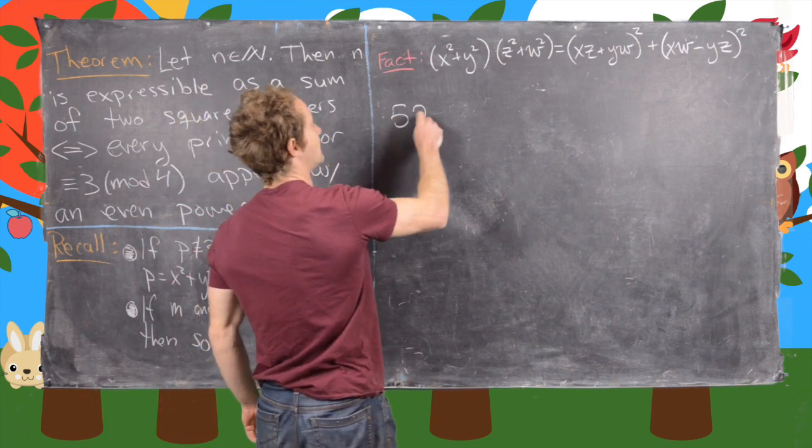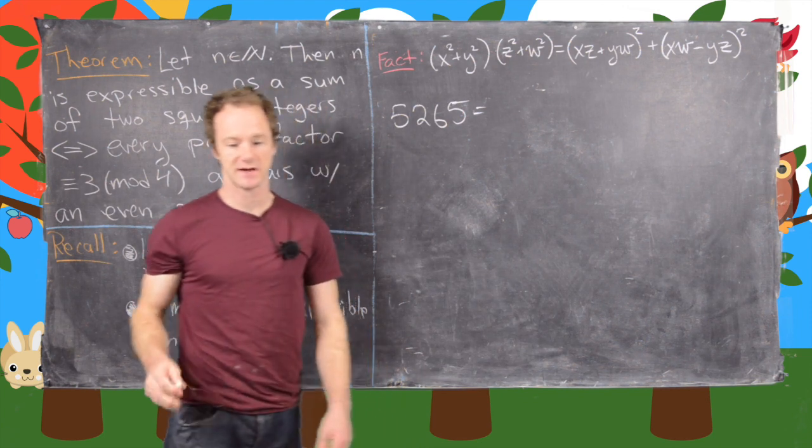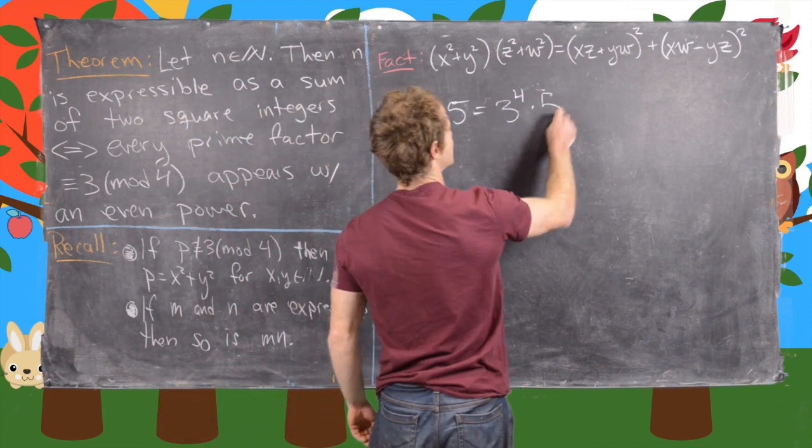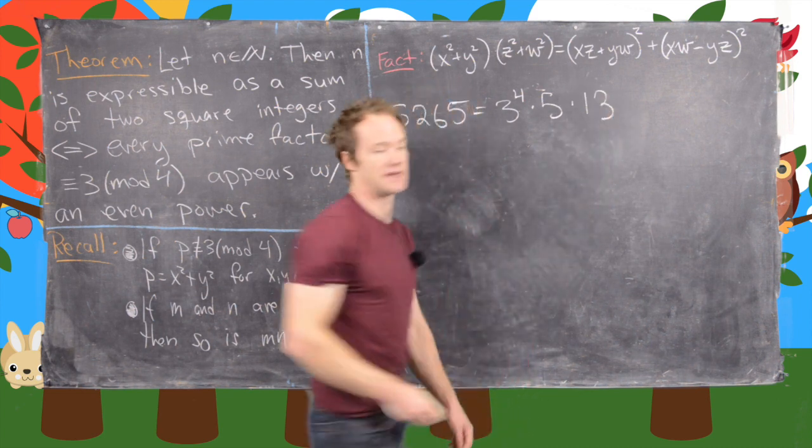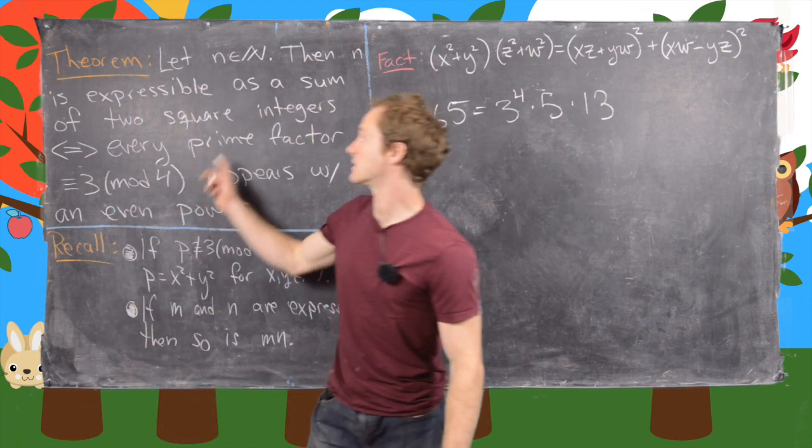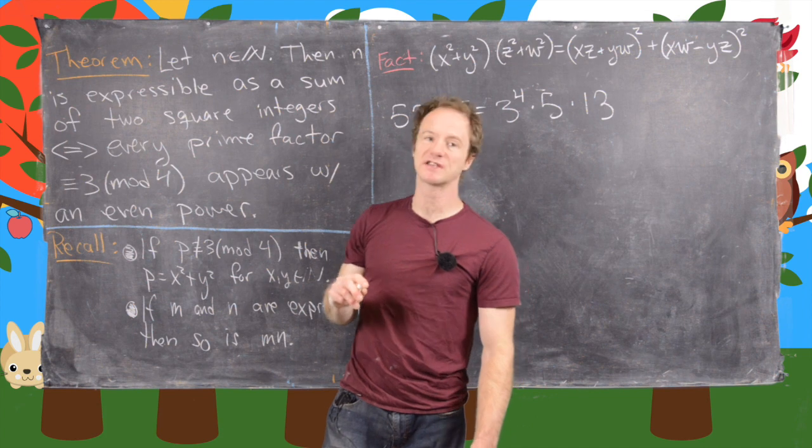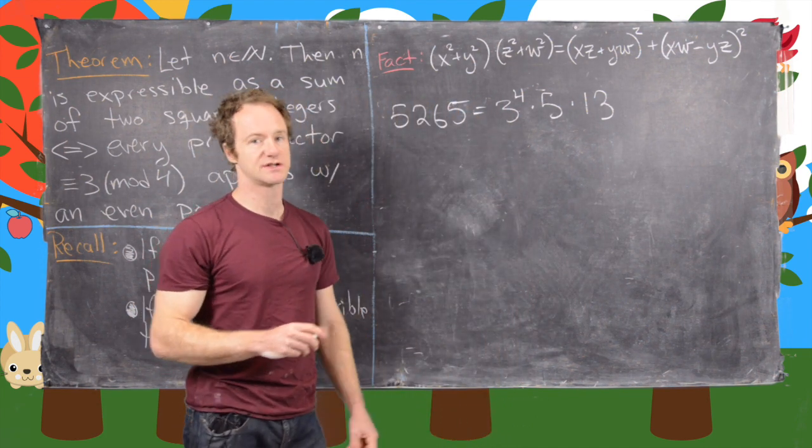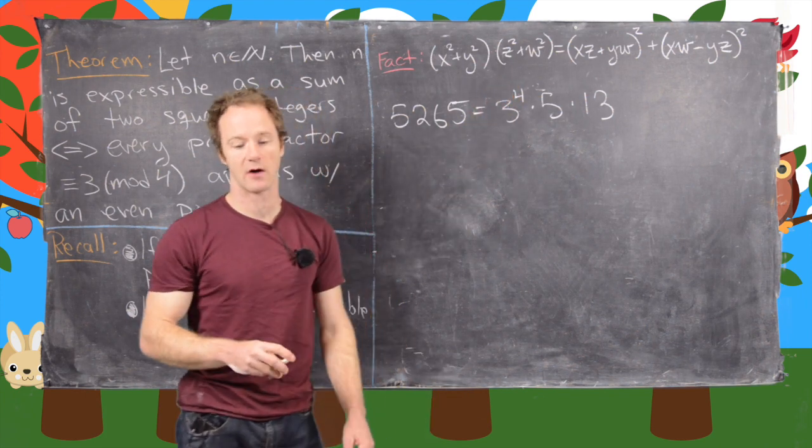So we have 5265. So that's going to be equal to 3 to the fourth times 5 times 13. Okay, so now let's look at this theorem. Is it expressible? Yes, it is expressible because our only prime factor which is of the form 3 mod 4 is to an even power.